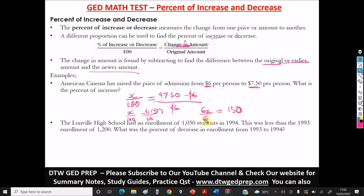So here, we divide, to get X, we divide both sides by 6. And 150 divided by 6 will give us what, 25. So we have X is equal to 25%. So the percent increase of the price of admission is what, 25%. It went 25% up. That's the increase from $6 to $7.50 is a 25% increase.